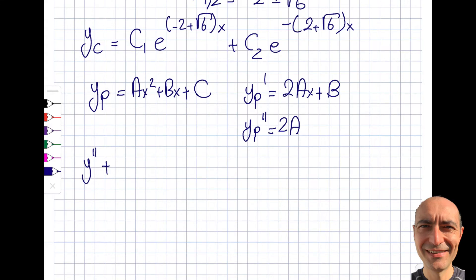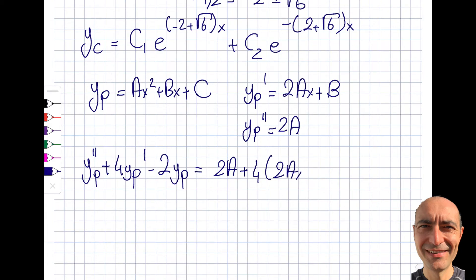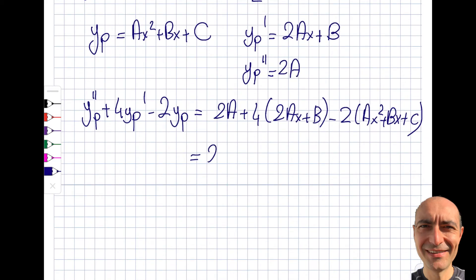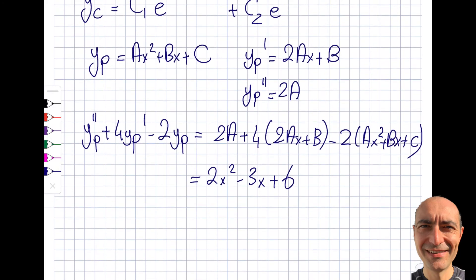Substituting into the equation: 2A + 4(2Ax + B) − 2(Ax² + Bx + C) = 2x² − 3x + 6. Expanding: the x² term gives −2A, the x terms give 8Ax − 2Bx, and the constant terms give 2A + 4B − 2C. Equating like terms on both sides: the right-hand side has 2x² − 3x + 6.